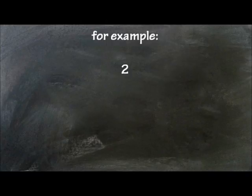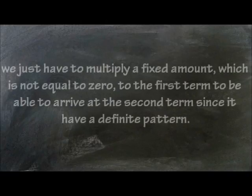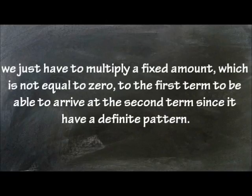For example, 2, 6, 18, 54 is a sequence. We just have to multiply a fixed amount which is not equal to 0 to the first term to be able to arrive at the second term since it has a definite pattern.